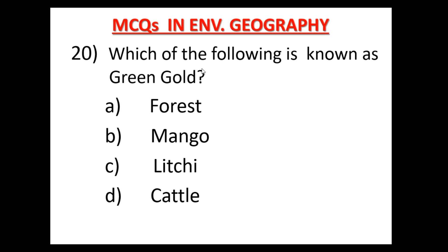Question number 20: Which of the following is known as 'green gold'? निम्न में से कौन green gold के नाम से जाना जाता है — हरा सोना? Option A: Forest, Option B: Mango, Option C: Litchi, Option D: Cattle. Forest is known as green gold. Option A is the correct answer.